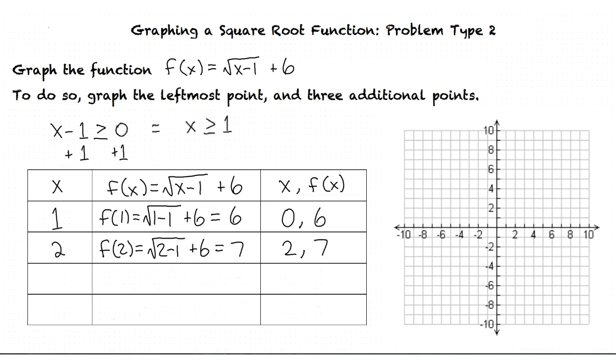For our last two points, we can use x values 5 and 10. For x equals 5, we plug in our x values and get the function f of 5 equals the square root of 5 minus 1 plus 6. We subtract 1 from 5 and get 4, which we know has the square root of 2. Add 6 to 2, and you get 8. So our point is 5 comma 8.